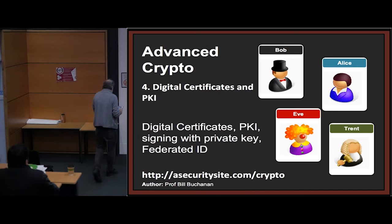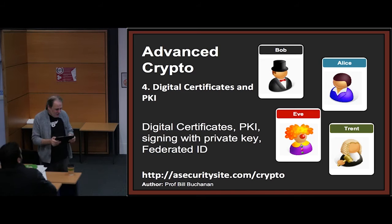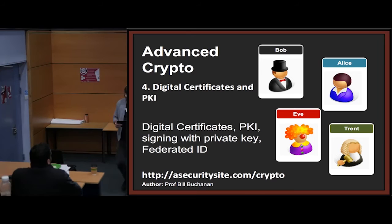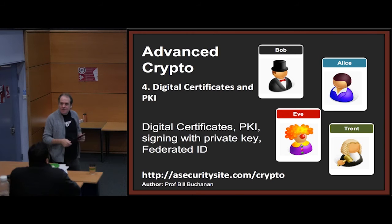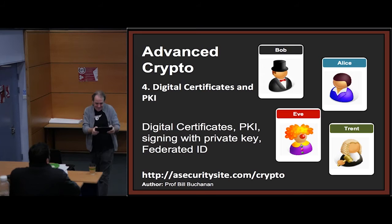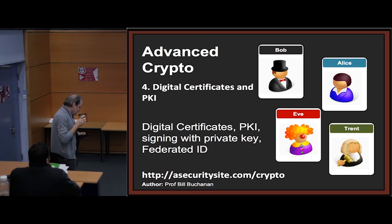So now we'll look at the elephant in the room — PKI, the most misunderstood area, full stop, in terms of security. A flawed infrastructure based on the horrible SSL protocol, with the ability to create man-in-the-middle proxies — the Superfish example, where Superfish could put a proxy on your machine and intercept all your communications and still make it look as if it was Google you were communicating with. The major flaw is that nobody really understands what it is and how it's created. So we'll hopefully be able to investigate that in this part of the lecture.